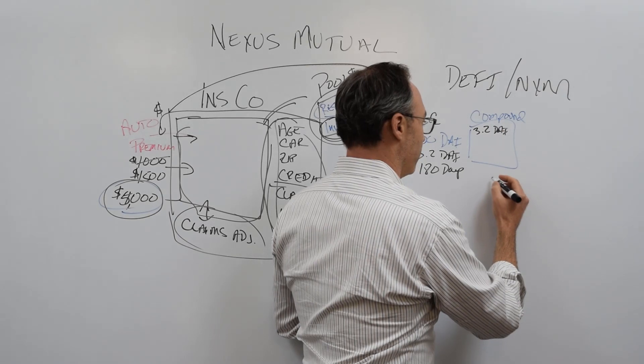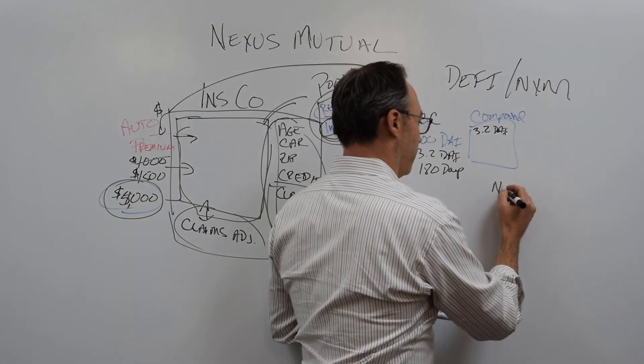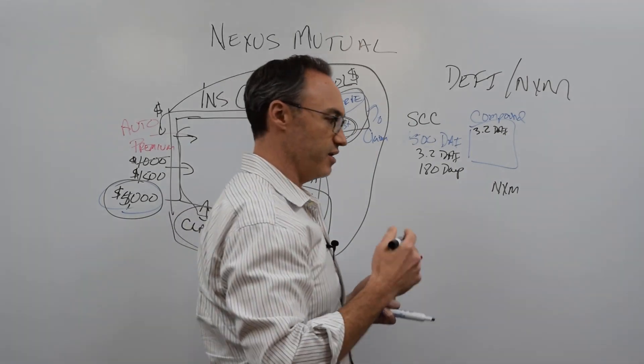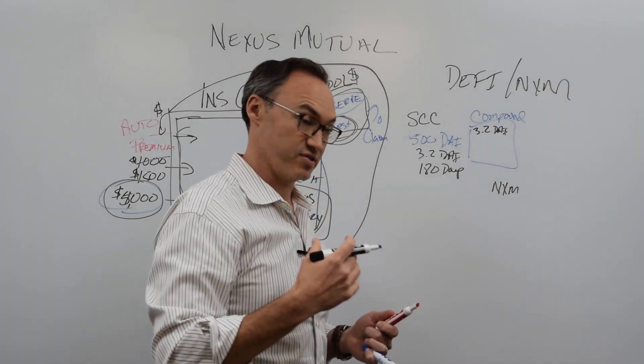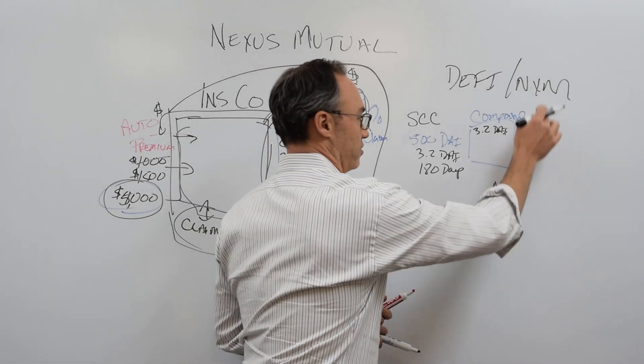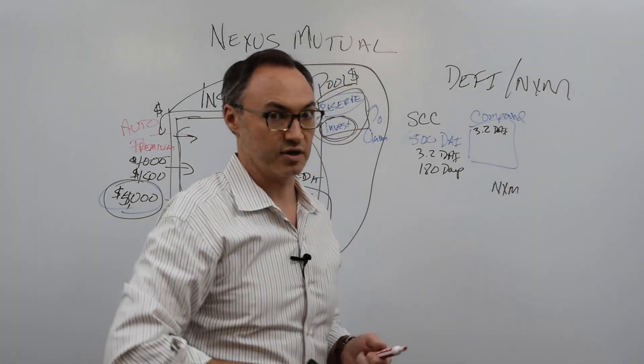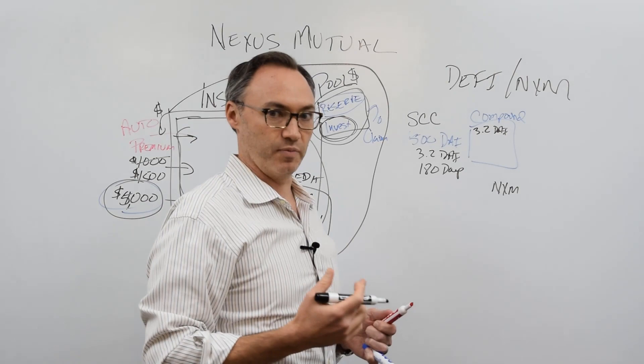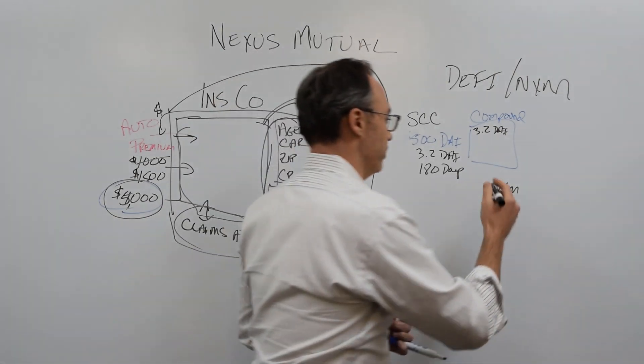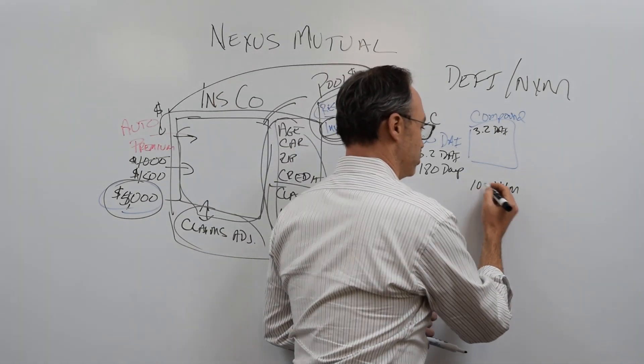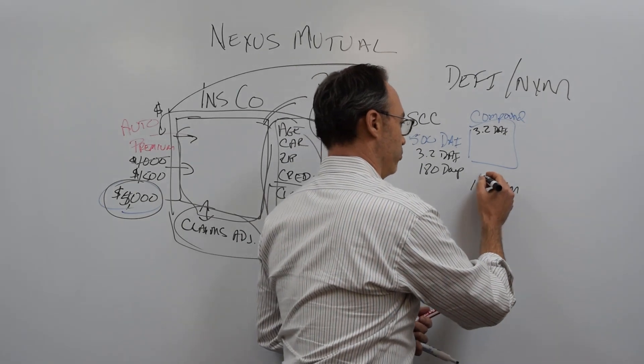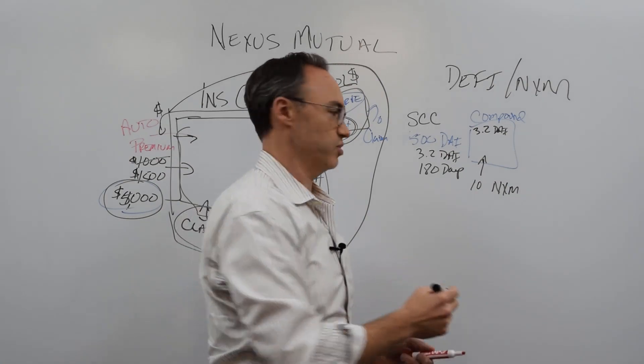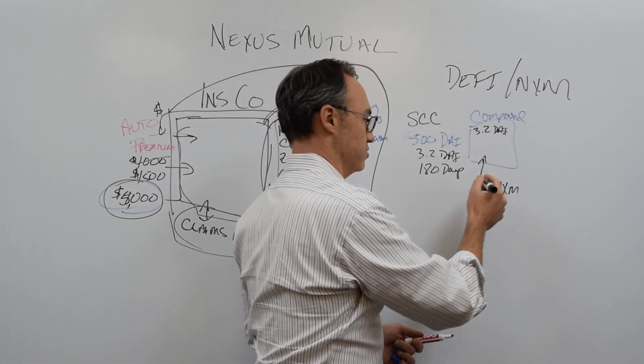So I can be a member, and I can buy Nexus Mutual tokens, and I can decide to be a risk assessor. A risk assessor means I go look at potentially the compound smart contract, and I think there's a really well-written smart contract. I don't think anyone's going to bust it up. I don't think anyone's going to find a flaw in it. I'm going to stake 10 Nexus Mutual tokens on this particular smart contract.